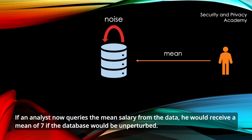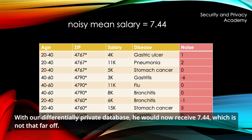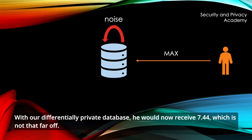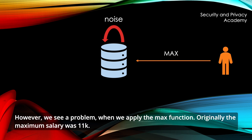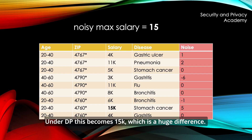We have now applied global or centralized differential privacy. If an analyst queries the mean salary from the data, they would receive a mean of 7 from the unperturbed database. With our differentially private database, they would now receive 7.44, which is not that far off. However, we see a problem when we apply the max function. Originally, the maximum salary was 11k, but under DP this becomes 15k — a huge difference. We will talk about the implications of this later.